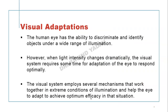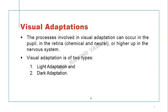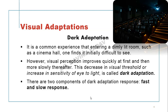Now, visual adaptation: the human eye has the ability to discriminate and identify objects under a wide range of illumination. However, when light intensity changes dramatically, the visual system requires some time to adapt and respond accordingly. Several mechanisms work together under extreme illumination conditions to help achieve optimum visual efficacy. The process involves both chemical and neural changes. There are two basic kinds of adaptation: light adaptation and dark adaptation.